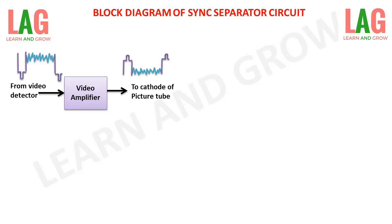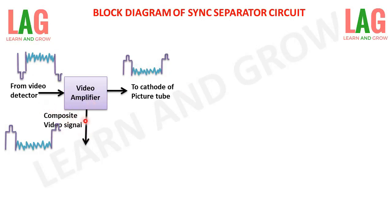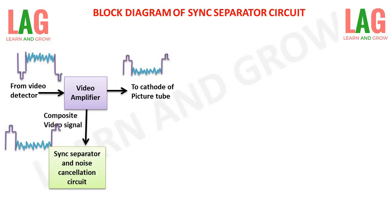The same phase-shifted composite signal from the video amplifier is applied to the circuit used to synchronize the horizontal and vertical signals — for scanning the signals from top to bottom and from right to left of the picture tube. The video amplifier also applies the phase-shifted composite video signal to the sync separator, which is a noise cancellation circuit that converts the composite video signal into a pulse.